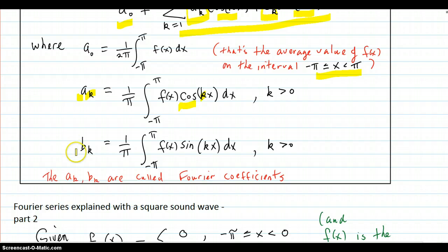And then the b k's, they're corresponding to sines multiplied by the f of x function. And again, the k is corresponding to this k. These a k and b k are called Fourier coefficients.